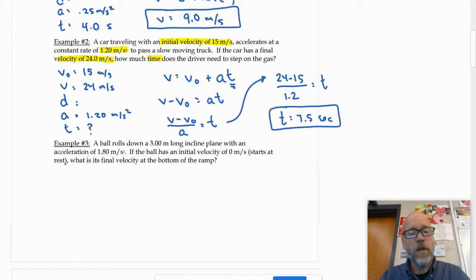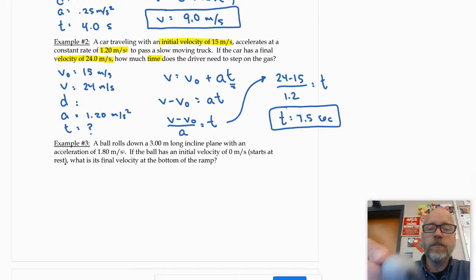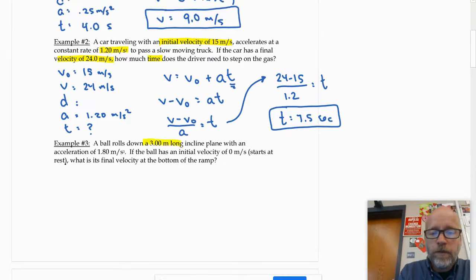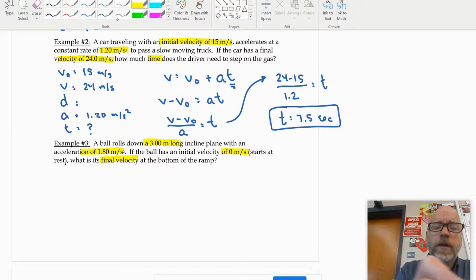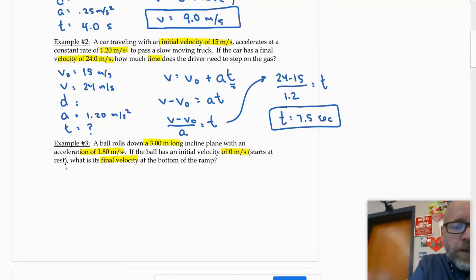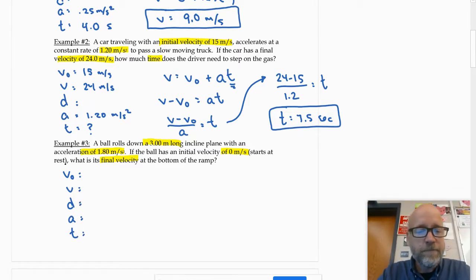Next one. Number three. A ball rolls down a 3 meter long incline plane with an acceleration of 1.8 meters per second squared. If the ball has an initial velocity of zero meters per second, meaning it starts at rest, what is the final velocity at the bottom of the ramp? So it gives me distance, acceleration, initial velocity, and I'm looking for final velocity. So as a way to organize my information, I'm going to make a simple chart. This is the part, V0, V, D, A, T, that I go into autopilot. Got it?